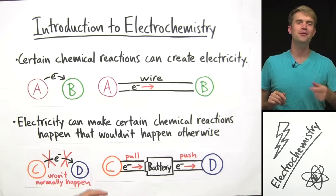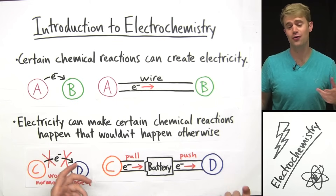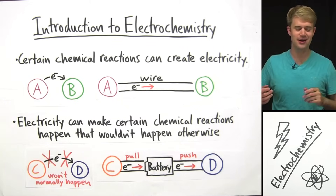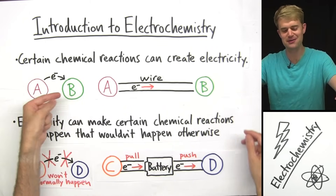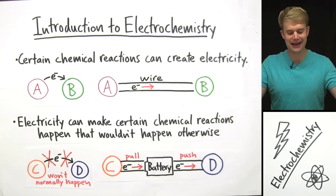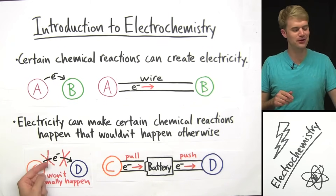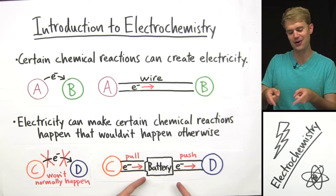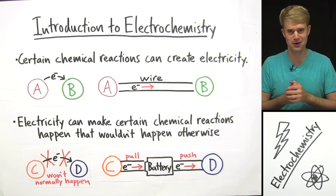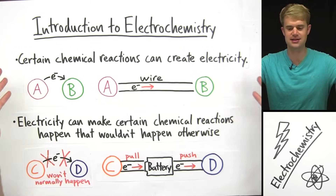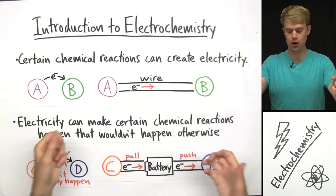So that's an introduction to electrochemistry. We looked at the two ways that chemical reactions and electricity interact. Certain chemical reactions — those that are spontaneous — can create electricity by separating the two reactants and putting a wire between them so the electrons move through the wire. Electricity can also make certain chemical reactions happen that wouldn't happen otherwise — we use the electrical energy from a battery to pull and push electrons, forcing oxidation-reduction reactions to happen. We looked at how galvanic or voltaic cells use these processes, and we looked at the electrolysis process of breaking down H2O into H2 and O2.